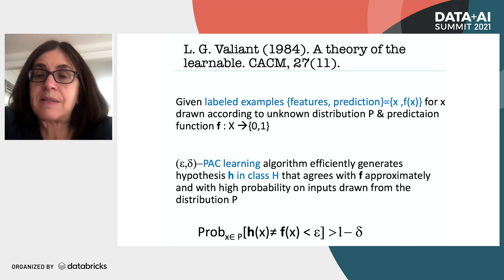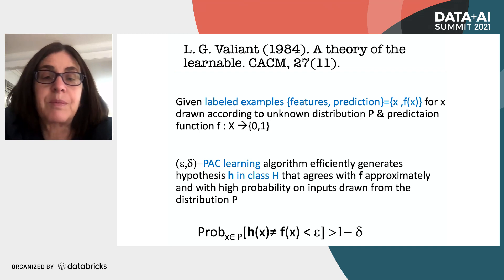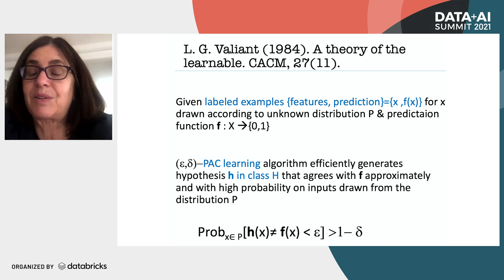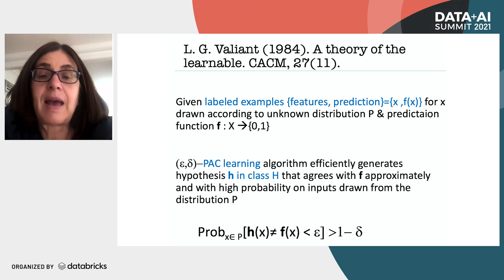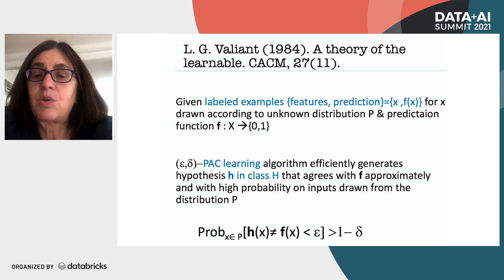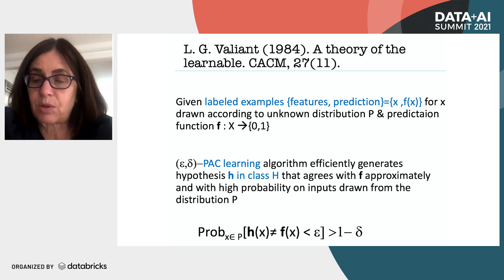The algorithm — which Valiant calls PAC learning, standing for probabilistically approximately correct — efficiently looks at all these examples and comes up with a risk assessment system, which I call H: a hypothesis that agrees with the historical data as best as possible, with high probability on inputs similar to what you've seen.